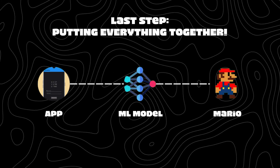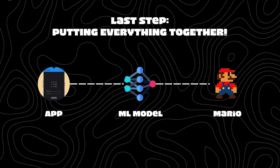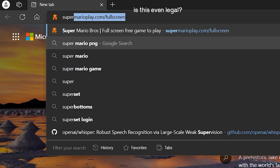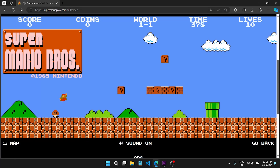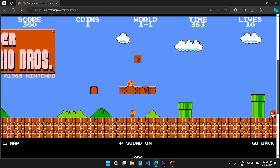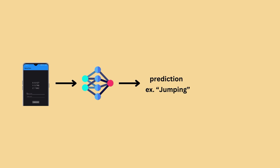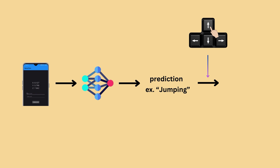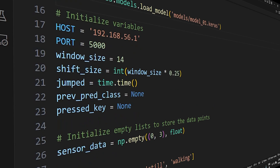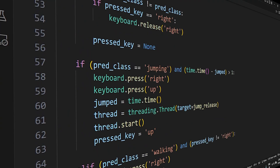The last step involves putting everything together: the app, the machine learning model, and most importantly, Mario. We will use SuperMarioPlay.com as the main interface — a web-based version of Mario remarkably similar to the actual game. In the final script that ties everything together, we get the sensor data from the app, input it into the machine learning model, and get a prediction. For example, if the model predicts a jumping action, I use Python's PyAutoGUI library to programmatically hit the up arrow key, causing Mario to jump. This action is repeated in a for loop, creating a seamless and interactive gameplay experience. It took a few days to create the final script, but it's now ready to be tested.